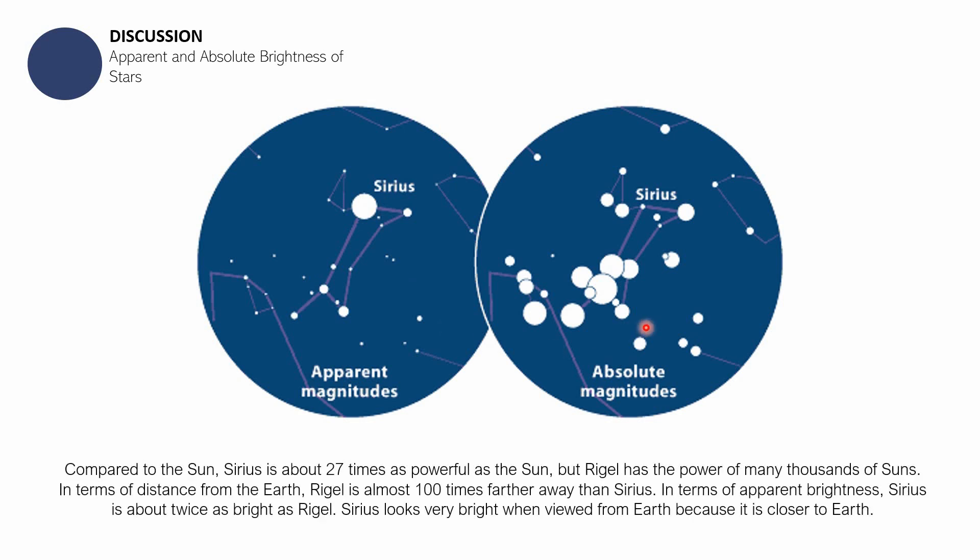I hope that you get the difference between apparent and absolute brightness. If you want to read more, one more example is Sirius and Rigel. You can go ahead and read this sentence right here.